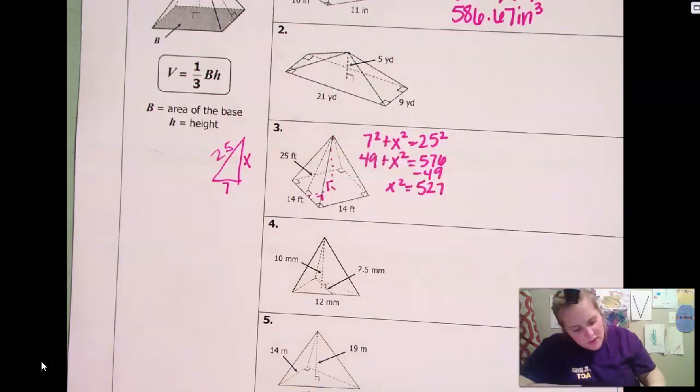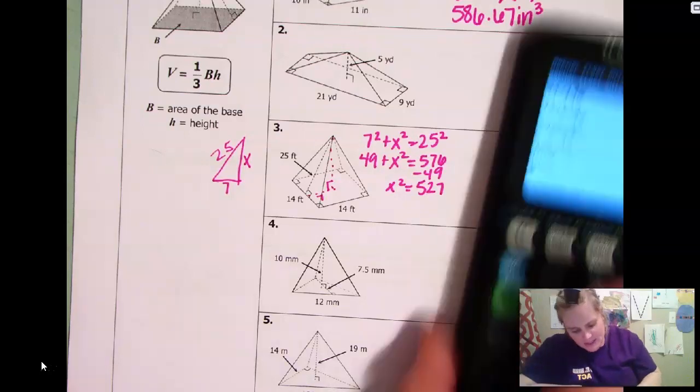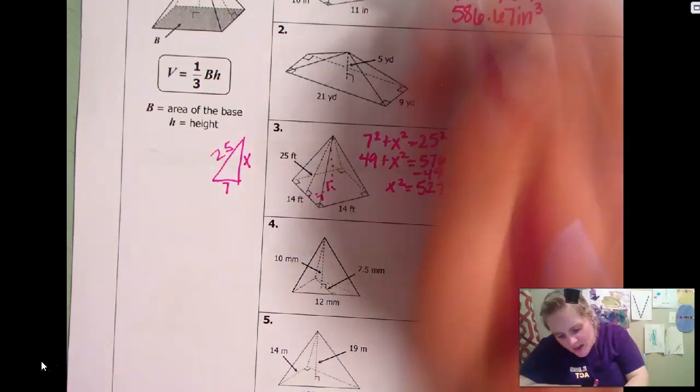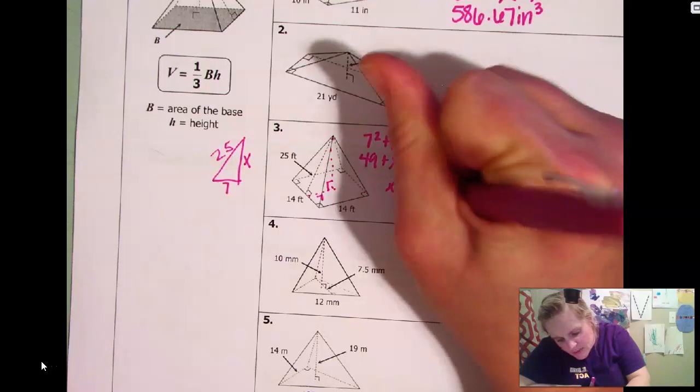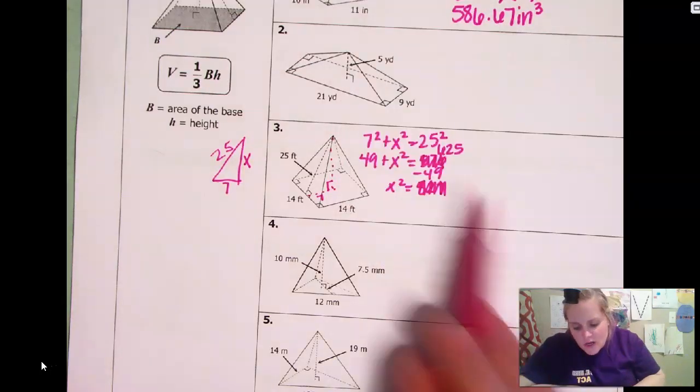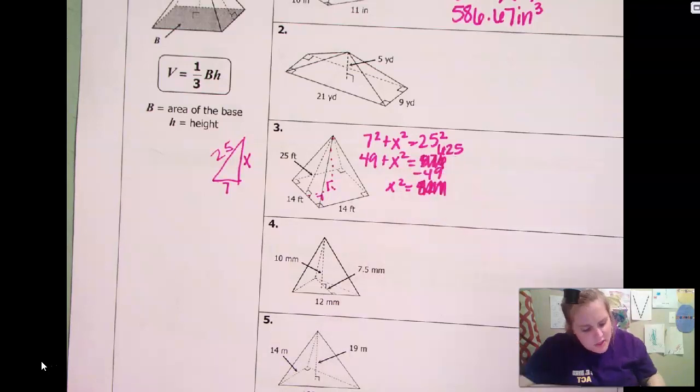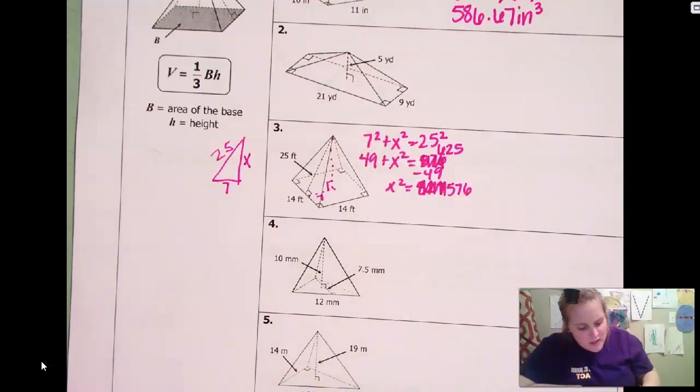I subtract 49. X squared equals 576 minus 49. Whoops. 576 minus 49. That equals 527. The square root of that, I believe is, did I mess something up? Y'all mess something up. Oh wait, I messed this up. 25 squared is 625.